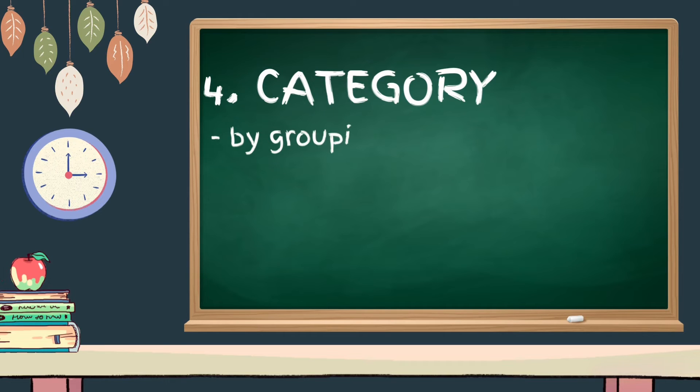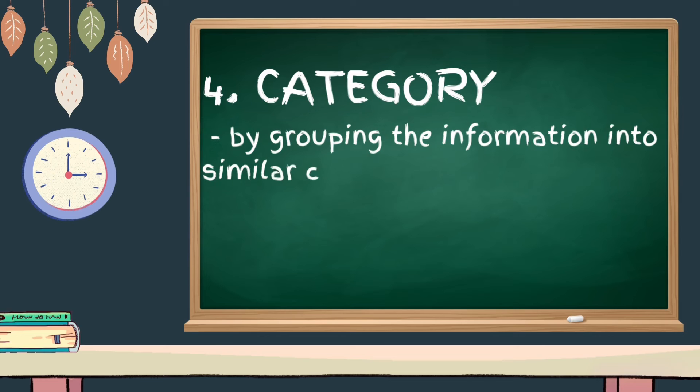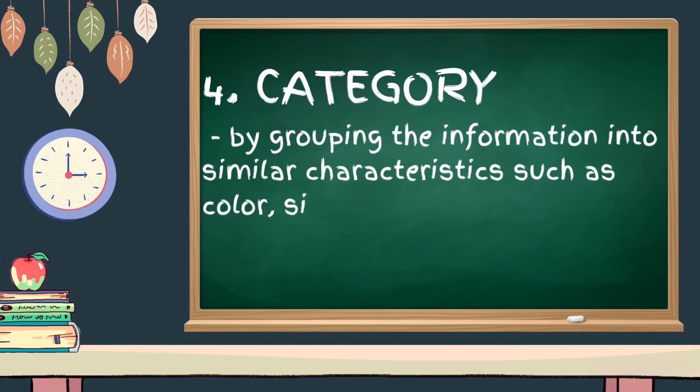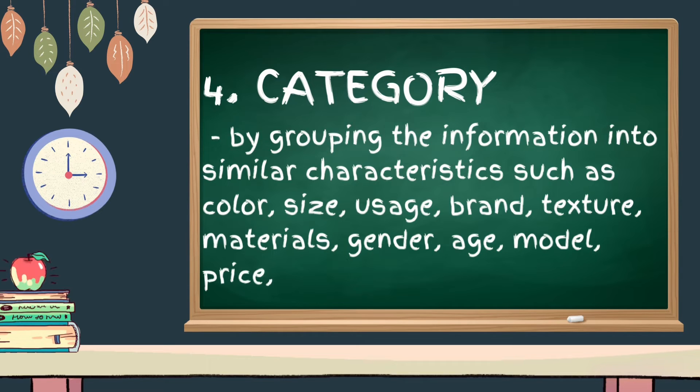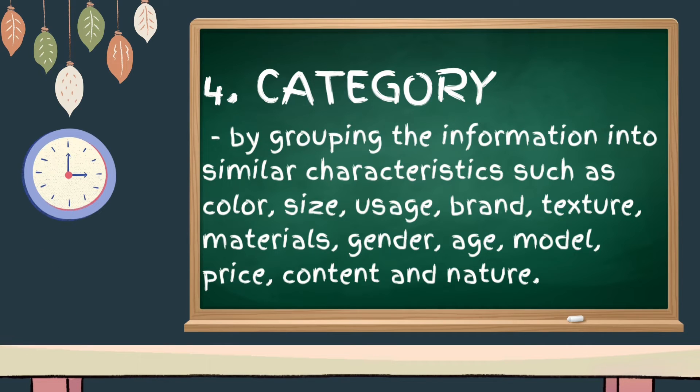Next is category. It's totally different from time, because in here we are going to group the information into similar characteristics such as color, size, usage, brand, texture, materials, gender, age, model, price, content, and nature.